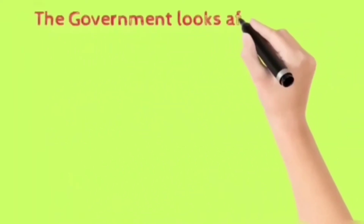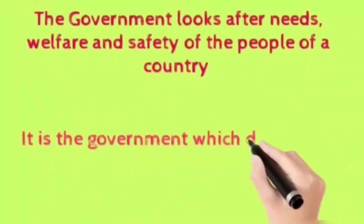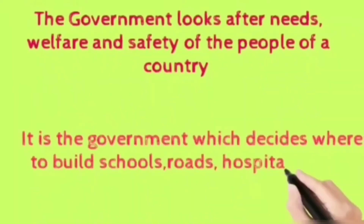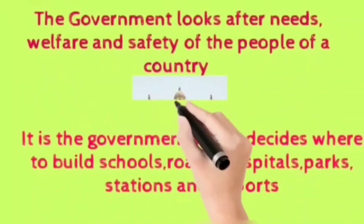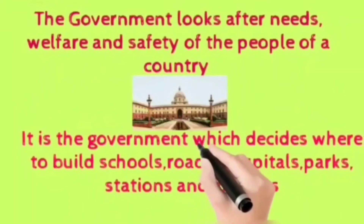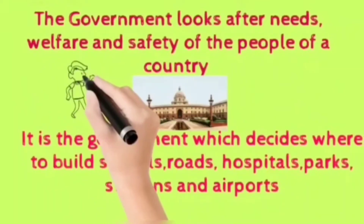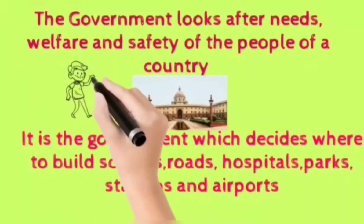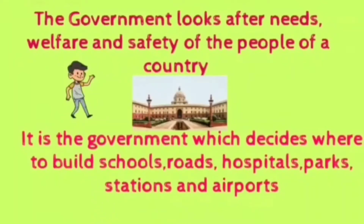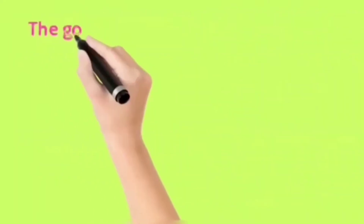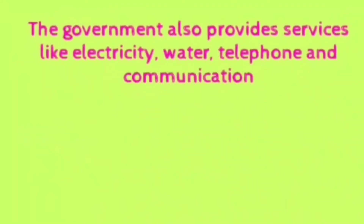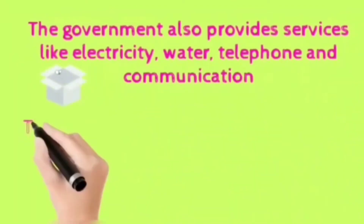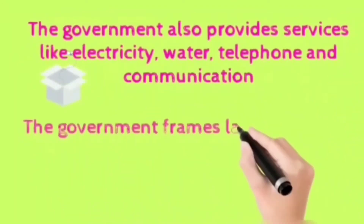The government looks after the needs, welfare, and safety of the people of a country. It is the government which decides where to build schools, roads, hospitals, parks, stations, and airports. The government also provides services like electricity, water, telephone, and communication.